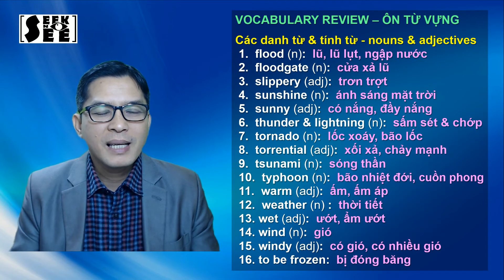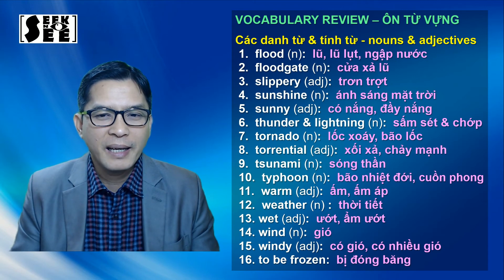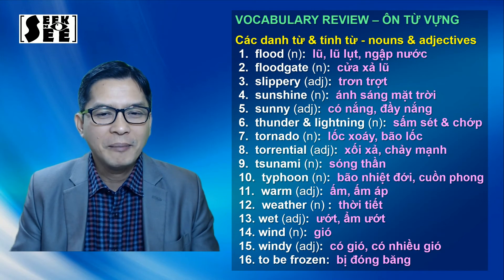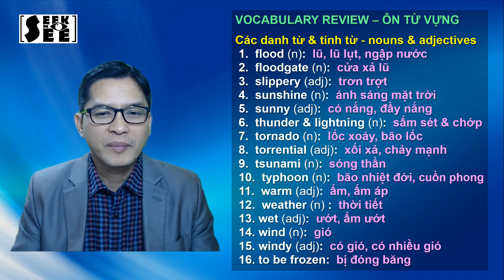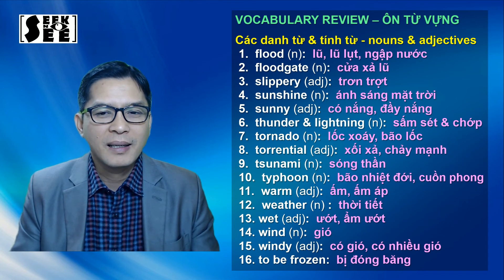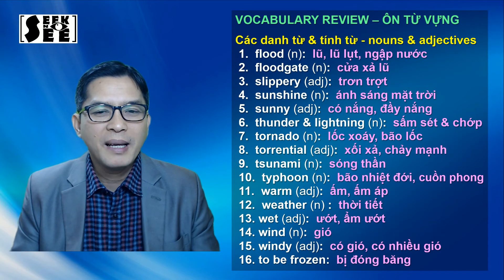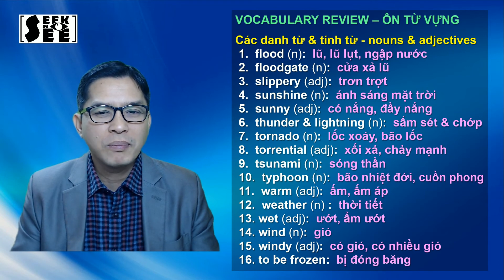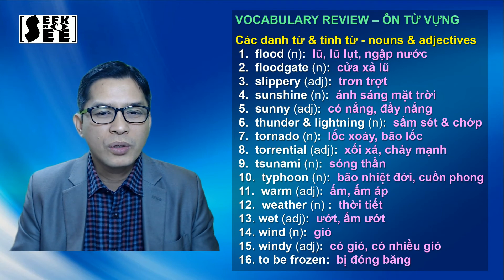Số 5: sunny, sunny, tức là tính từ có nắng hay là đầy nắng. Số 6: thunder and lightning. Thunder là sấm sét, còn lightning là chớp, chớp nhoáng. Thunder and lightning là sấm sét chớp nhoáng. Số 7: tornado, là lốc xoáy hay là bão lốc. Số 8, tính từ torrential, là xối xả hay là chảy mạnh, chảy cuồn cuộn.